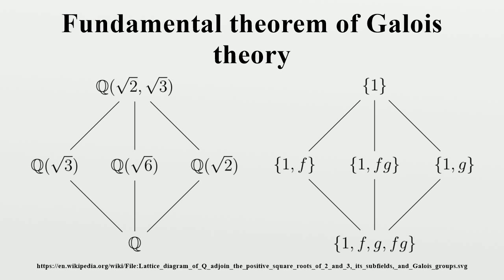Its Galois group G = Gal(K/Q) can be determined by examining the automorphisms of K which fix Q. Each such automorphism must send √2 to either √2 or -√2, and must send √3 to either √3 or -√3 since the permutations in a Galois group can only permute the roots of an irreducible polynomial.